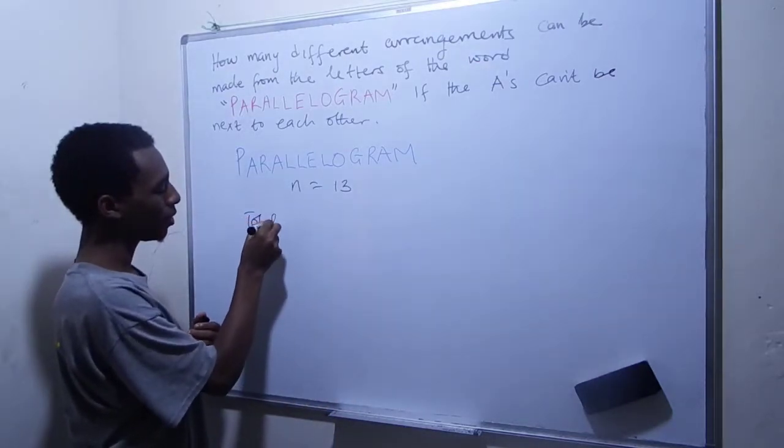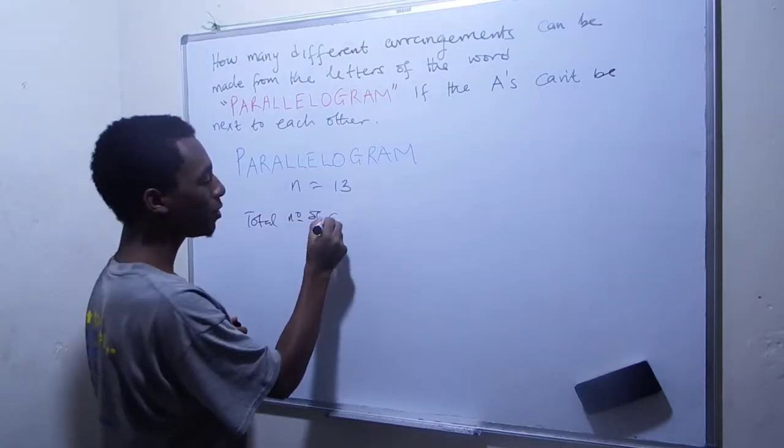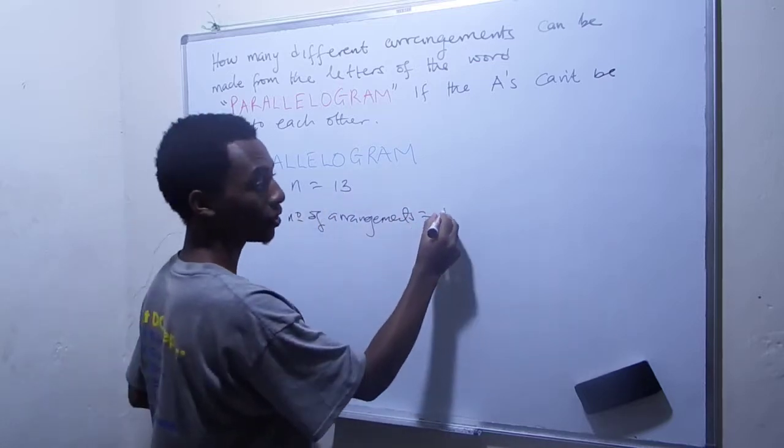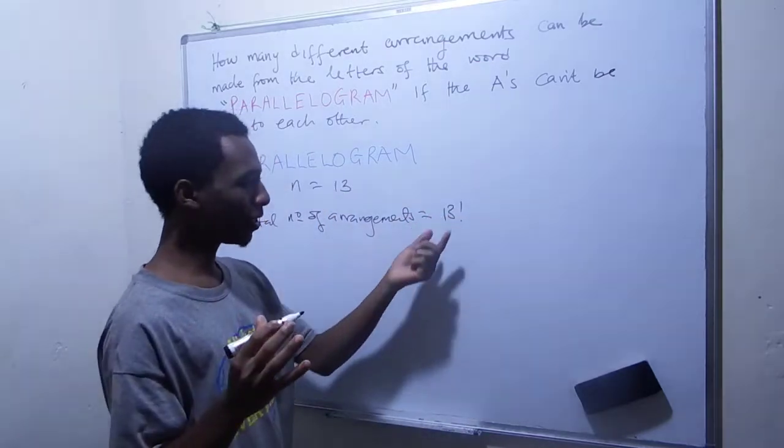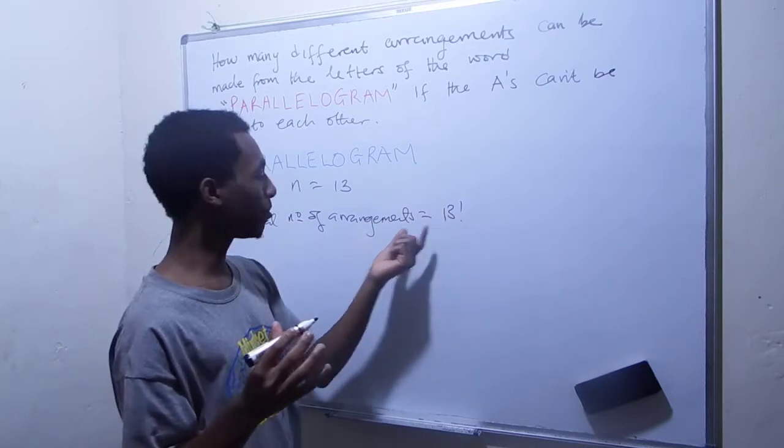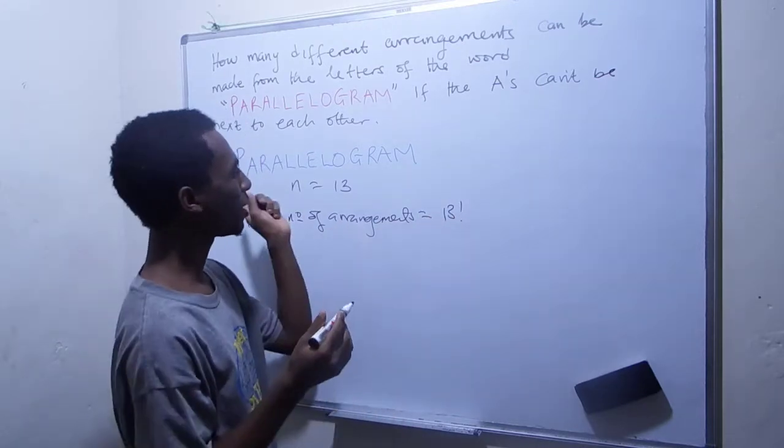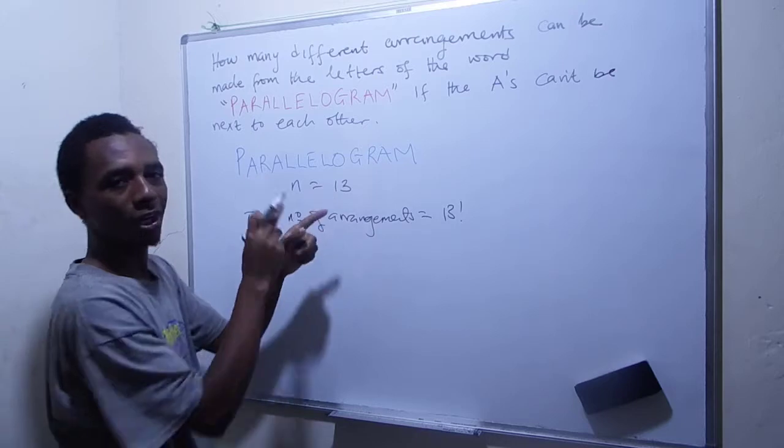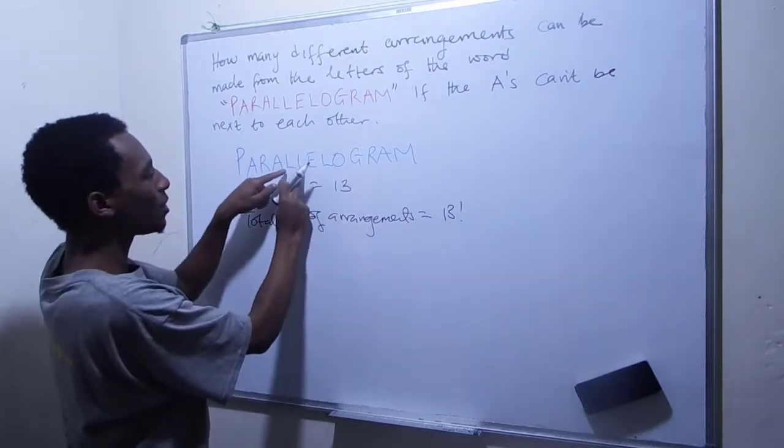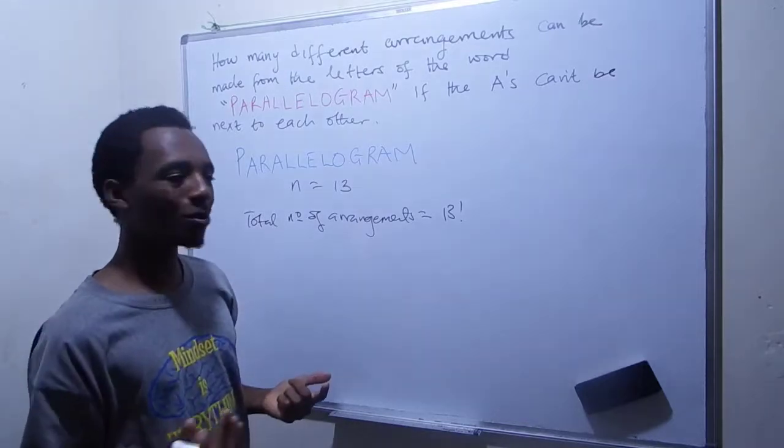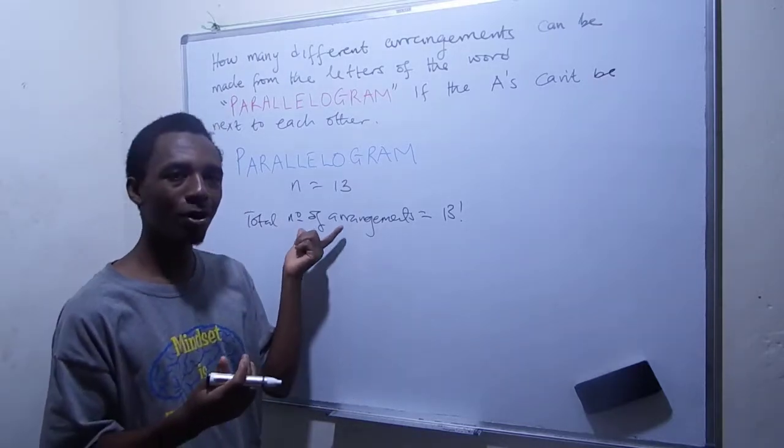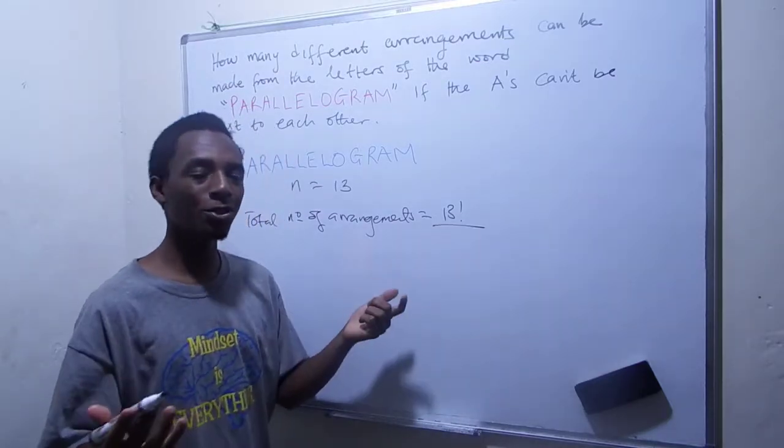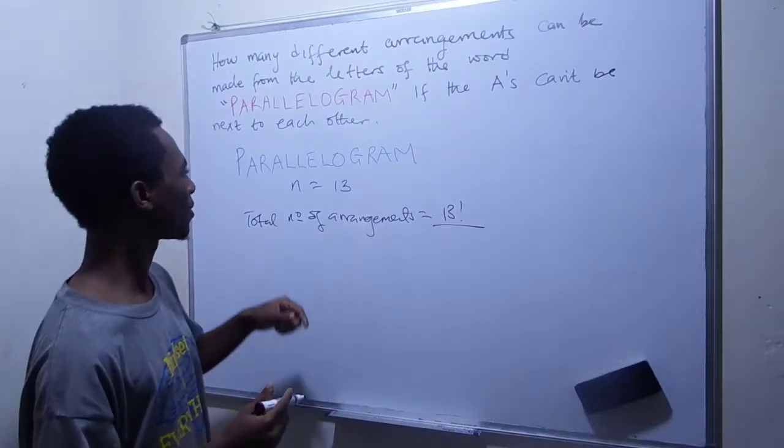So these are 13 items or 13 letters. So the total number of arrangements is going to be equal to 13 factorial. But wait a moment, that's not the actual number of total permutations because that's quite much. As you can see here, if I switch this L from here to here and I bring this here, you wouldn't actually notice the difference. Or if I change this L from here to here and I put this here, you still wouldn't notice the difference. So to get the actual number of the total arrangements, I have to divide by the factorial of each of the repeated items in the list.